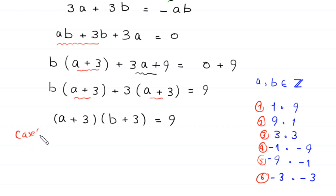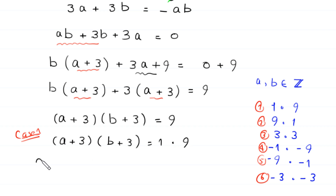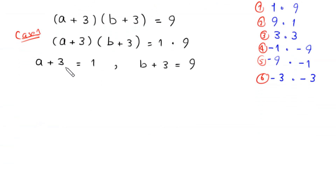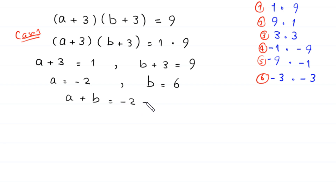In case 1, we write (a plus 3)(b plus 3) is equal to 1 times 9. So a plus 3 is equal to 1, giving a is equal to negative 2, and b plus 3 is equal to 9, giving b is equal to 6. Therefore a plus b is equal to negative 2 plus 6, which equals 4. This is the first solution.